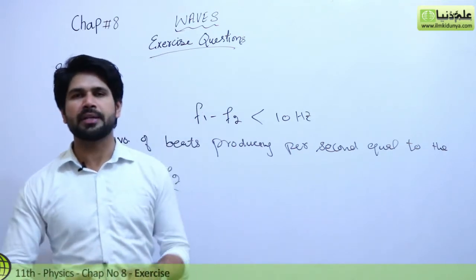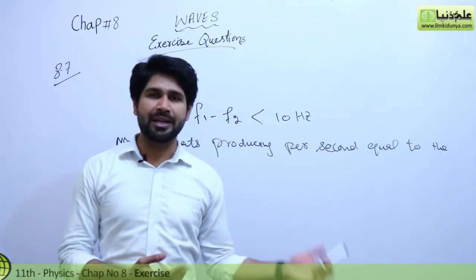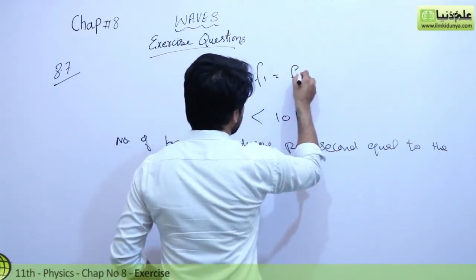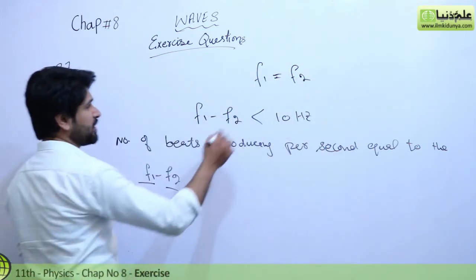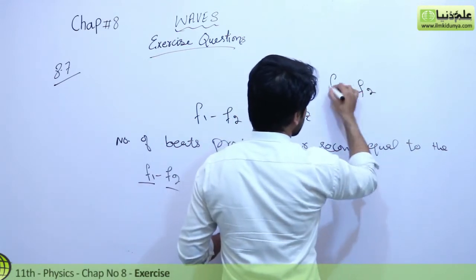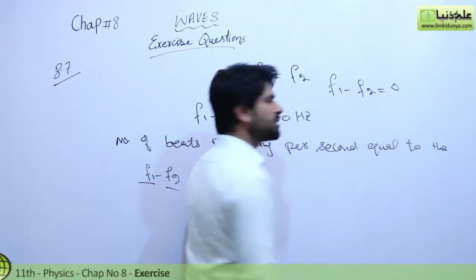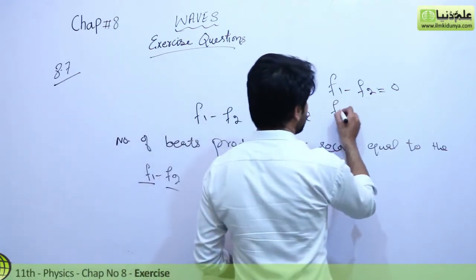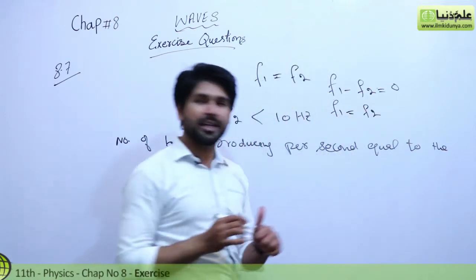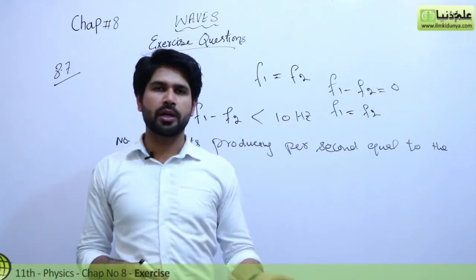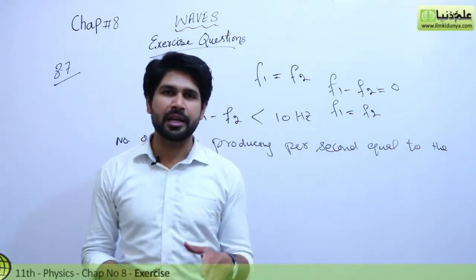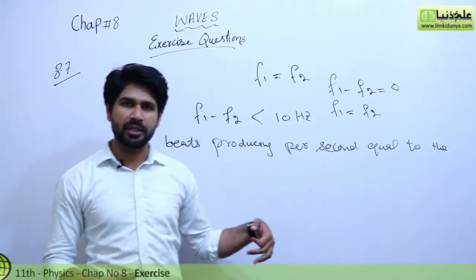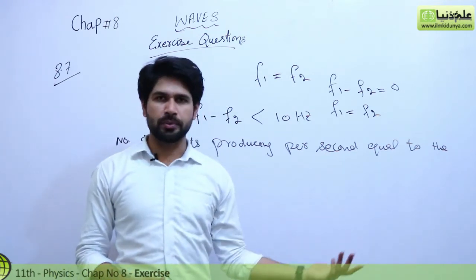When we sound both instruments, they produce a number of beats per second equal to the difference of the frequencies of those two instruments. Gradually, the number of beats produced per second will become zero, because both instruments will then have the same frequency. The frequency difference between the two instruments equals zero, and we can say our instrument is tuned.